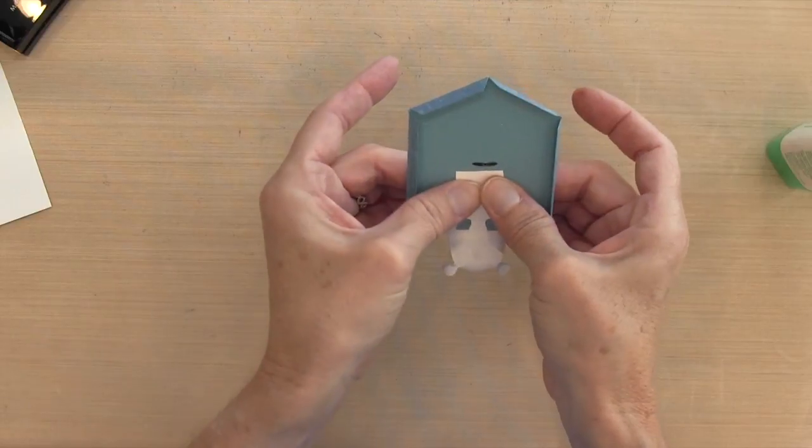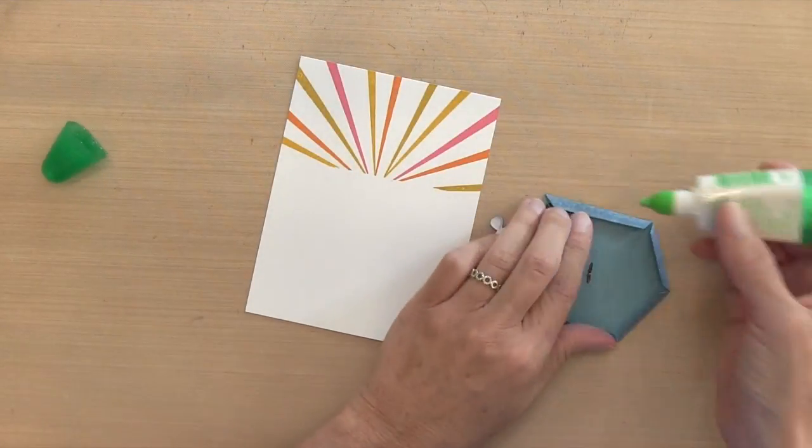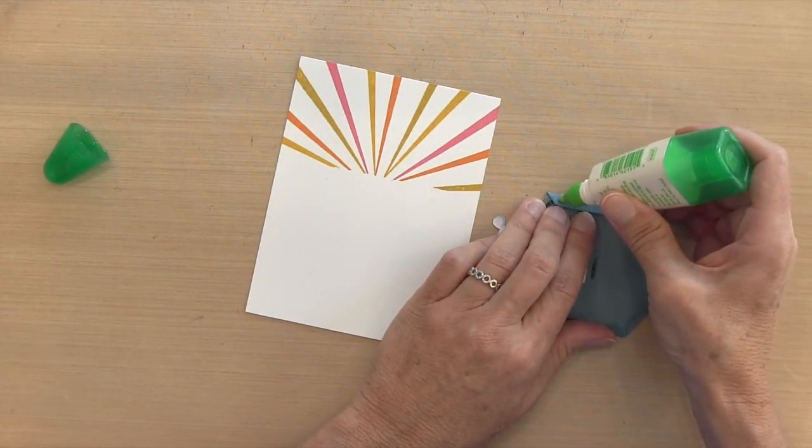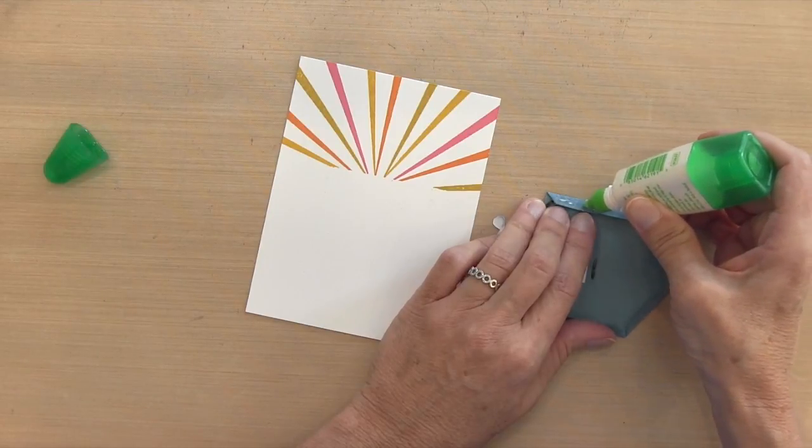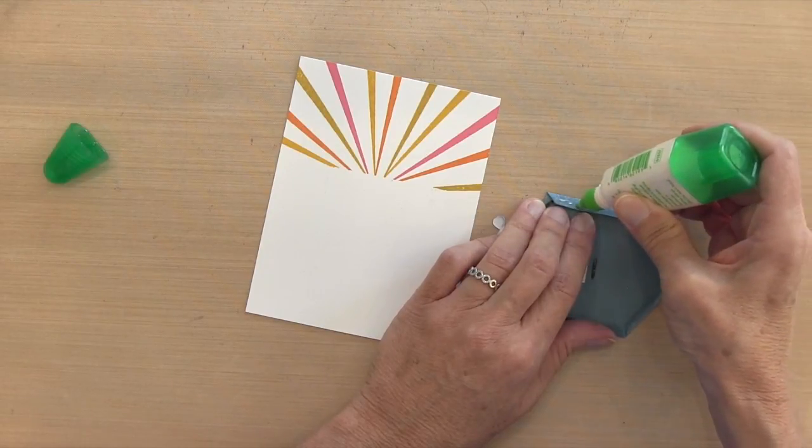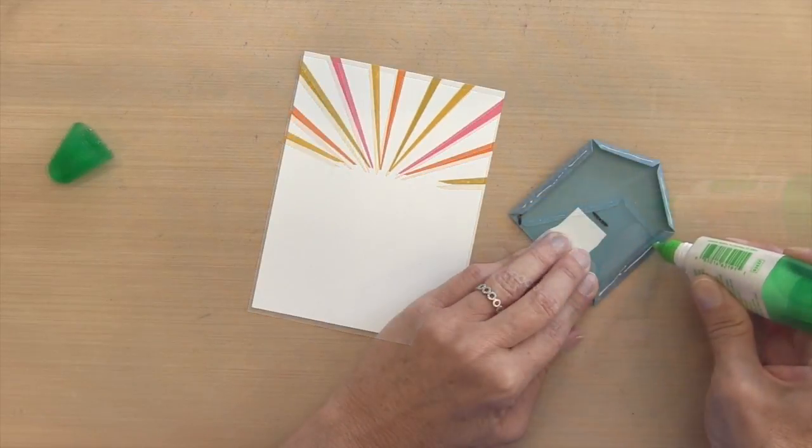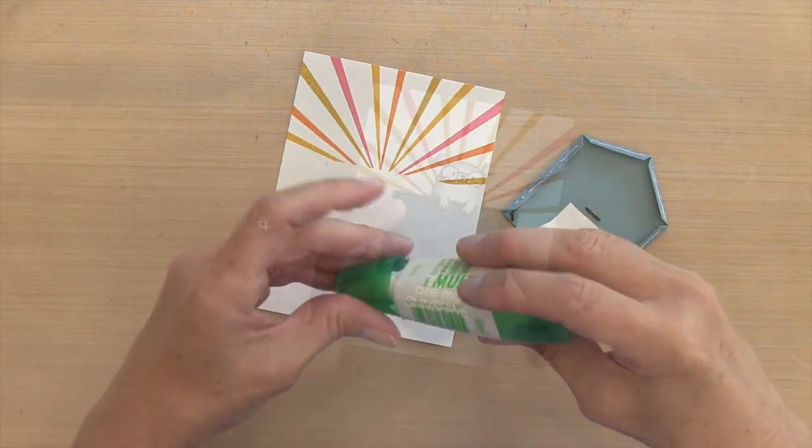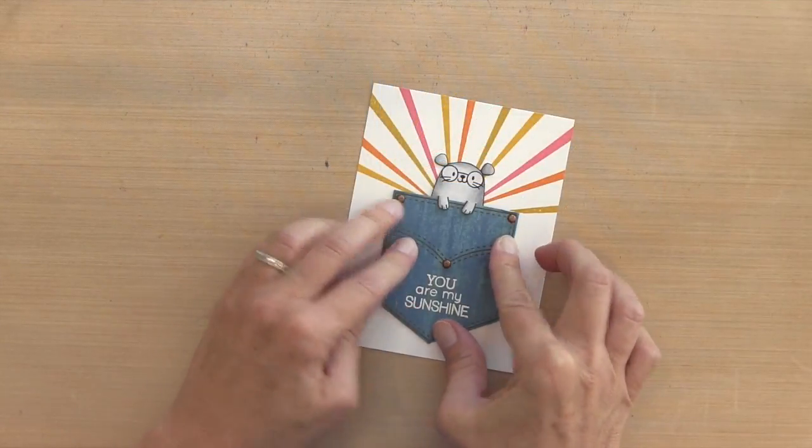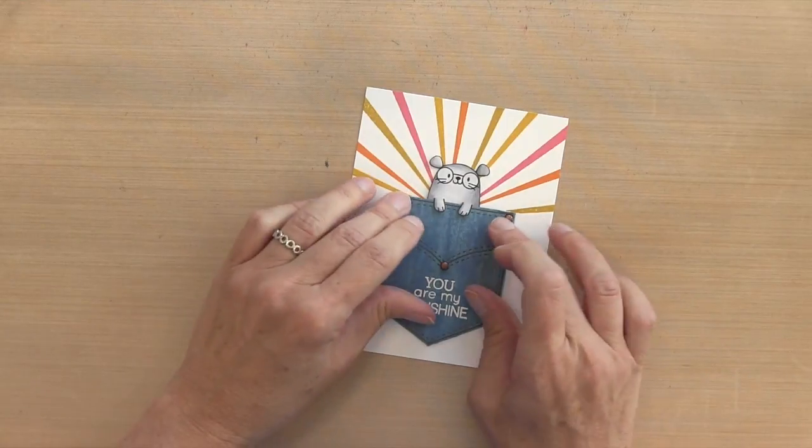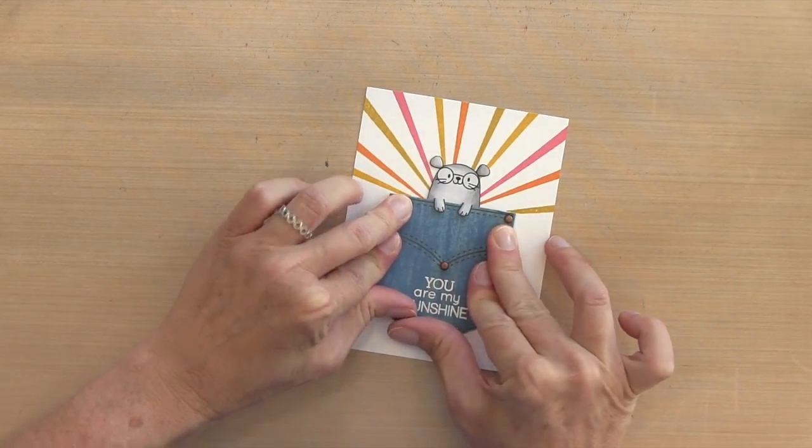And then I'm going to put that same glue on my pocket edges. I'm going to put a very thin line right in the middle. So I have a little bit of room to move a little bit when I place it onto the sunshine panel. And you just need a thin layer. You don't want it oozing out the side because it is tacky when it dries. Okay, so I'm going to put that right where my pencil lines were.